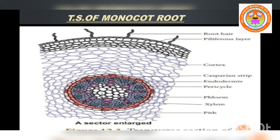The major function of casparian strips is to prevent the re-entry of water once it enters into the xylem. Next, passage cells — the endodermal cells which are opposite to the protoxylem points and devoid of casparian strips are called passage cells. Their major function is to help in the movement of water and dissolved salts from the cortex into the xylem.